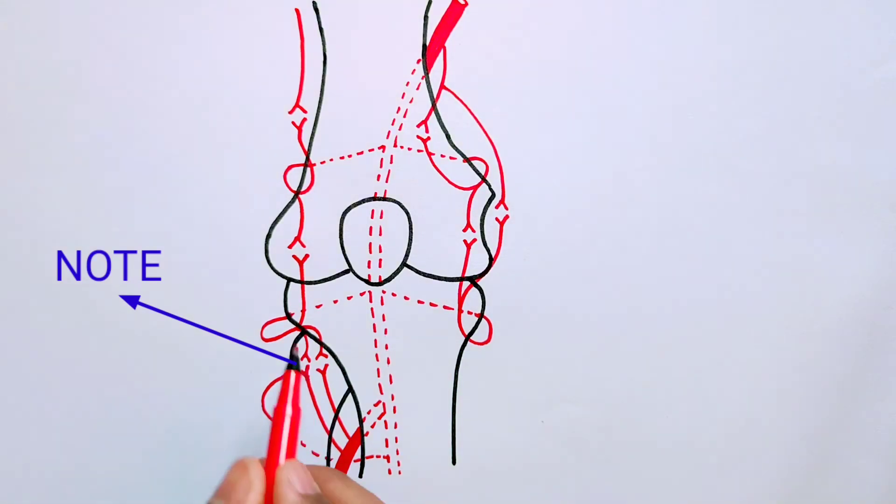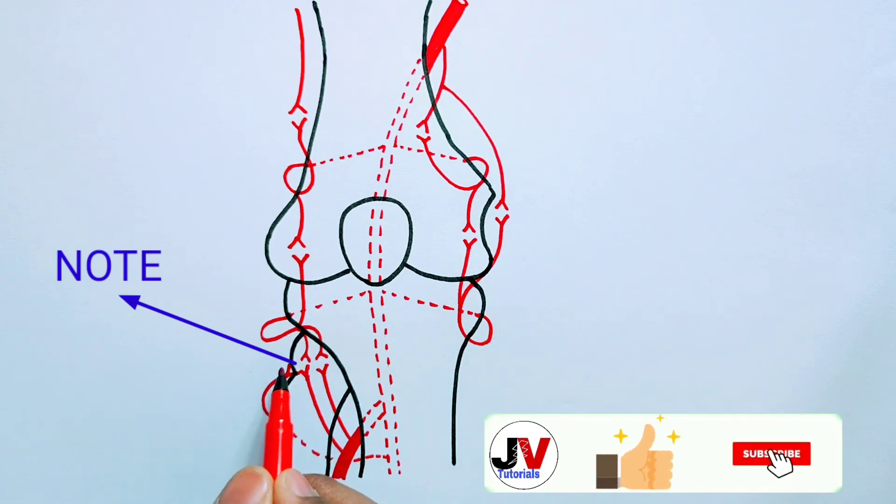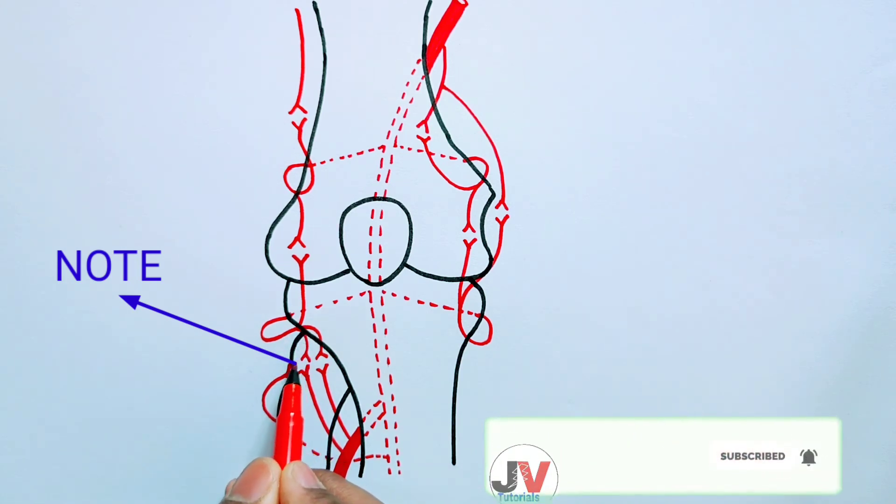I am not sure whether there has to be two sub branches of this artery or three sub branches of this artery. So that part you can just check and if required you can add one more sub branch over here.